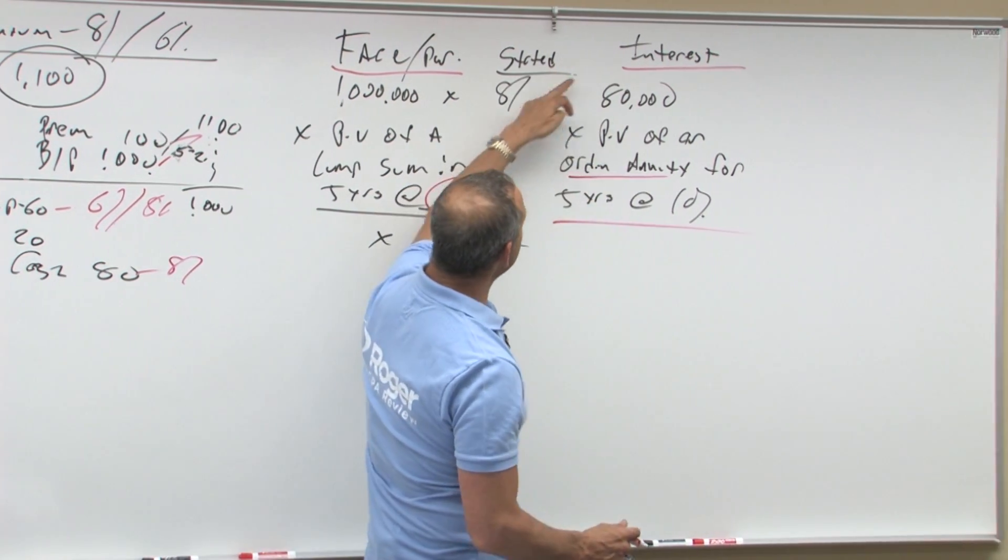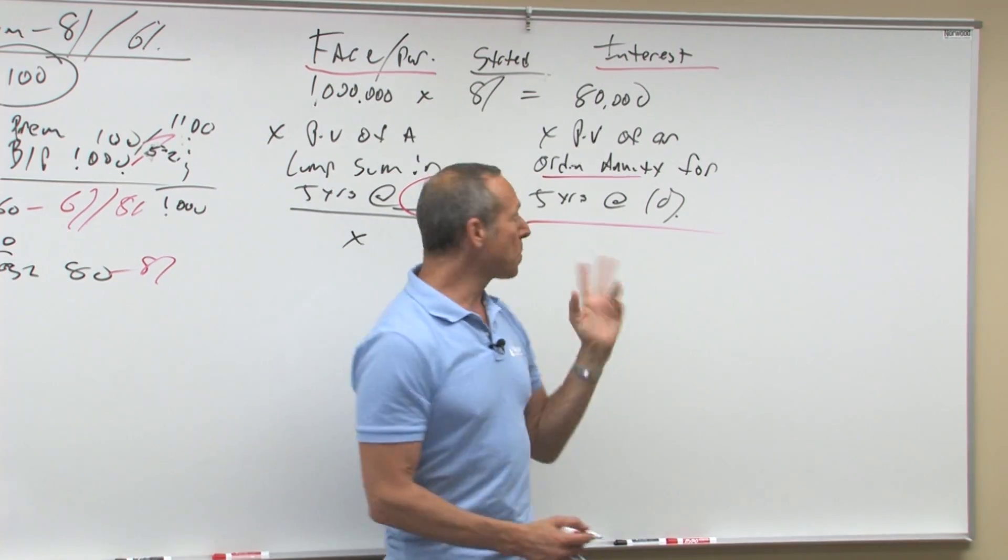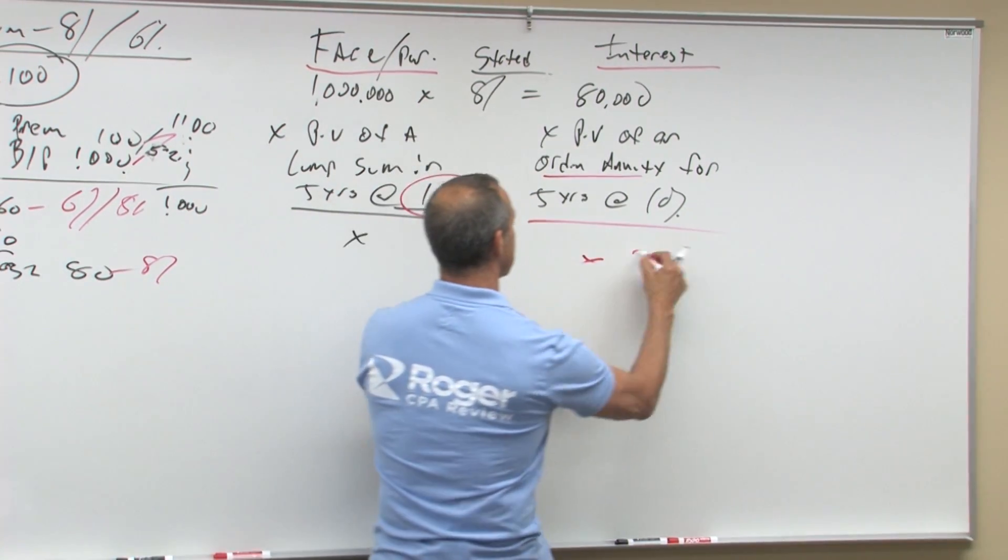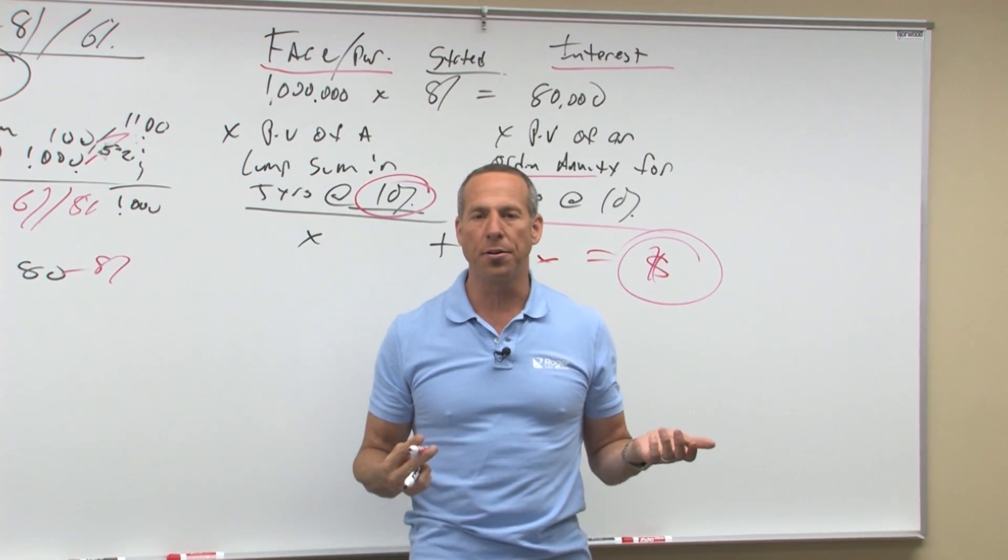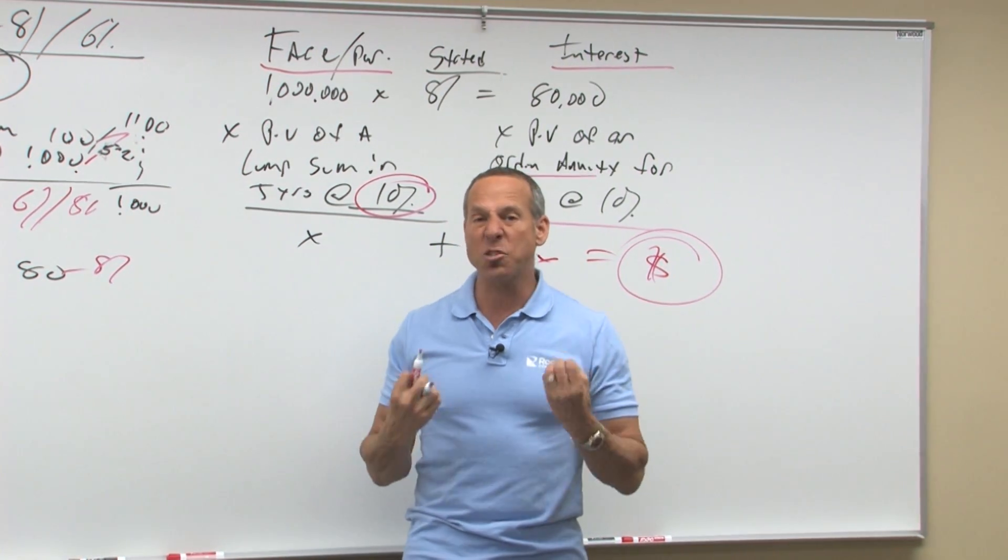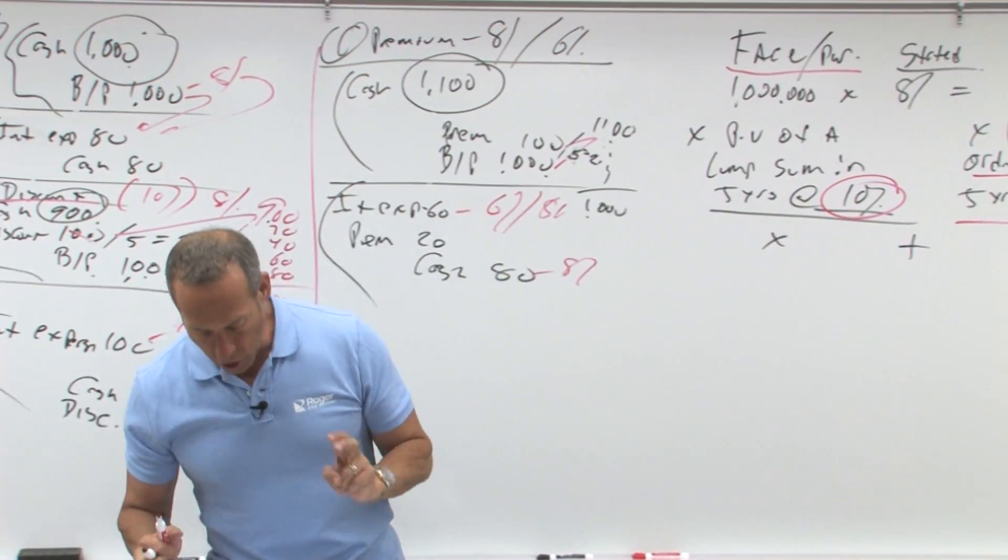So in a bond, we're going to use 80,000 times the present value of an ordinary annuity for five years at 10%. This plus this equals how much we should basically charge you for the bond. That's what we're looking for. So that's what the cash proceeds should be.